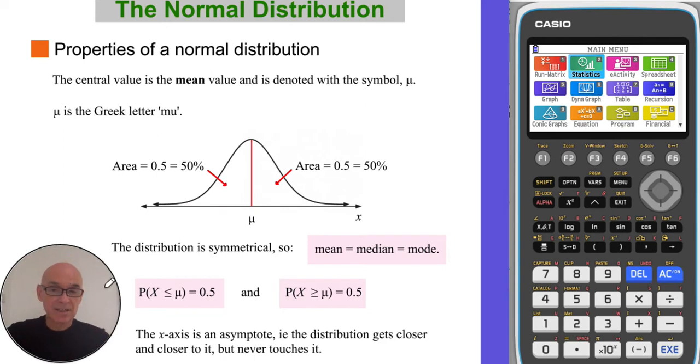Finally, the x-axis is an asymptote, so the distribution gets closer and closer towards it but never actually touches it.